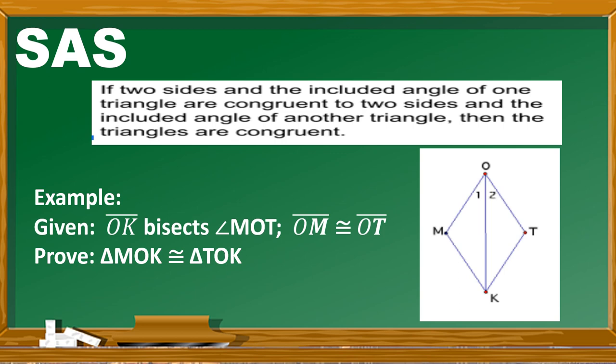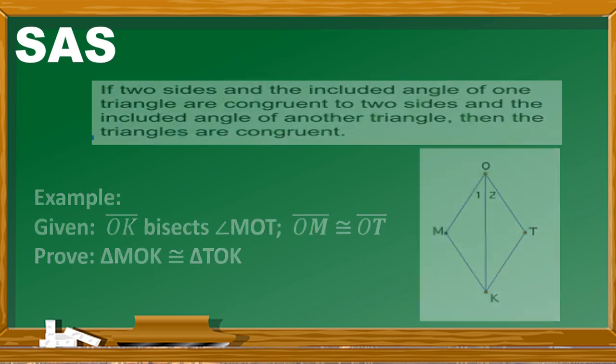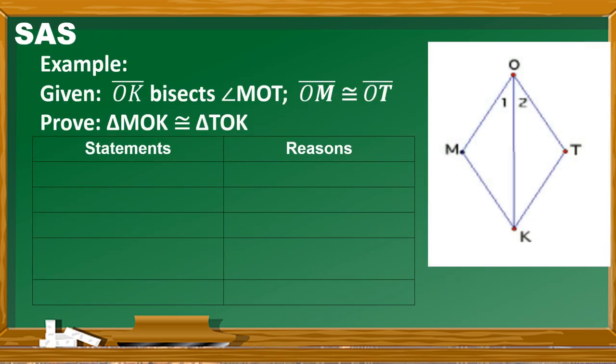For our SAS example, the given is: segment OK bisects angle MOT, and segment OM is congruent to segment OT. We need to prove that triangle MOK is congruent to triangle TOK using the two-column proof. We start with the first given: segment OK bisects angle MOT, and the reason is given.